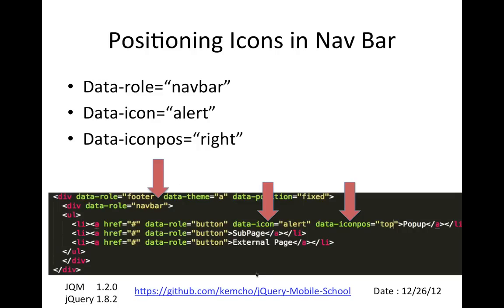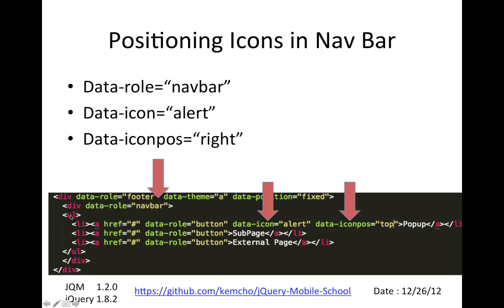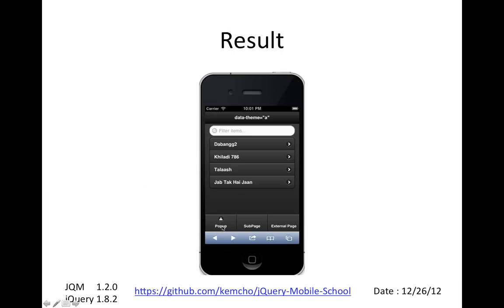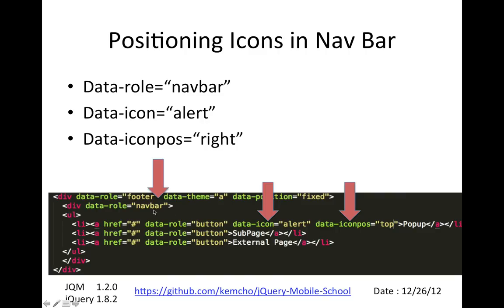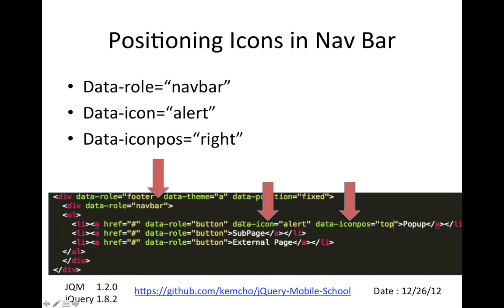To create a nav bar, you use data-role navbar as specified here. The output looks like a navigation bar at the bottom, generated when you put an unordered list of items inside a data-role navbar div. You can also specify icons in your list items and where you want those icons — for example, specifying the icon on top with an alert icon.